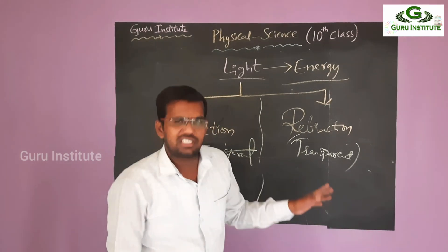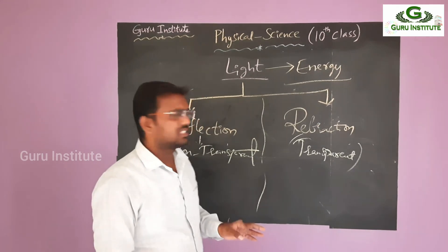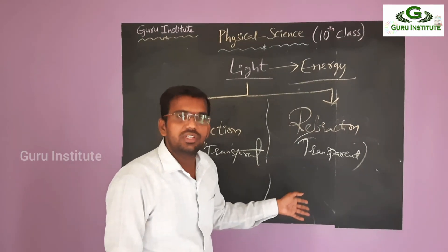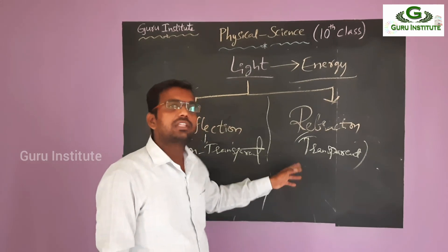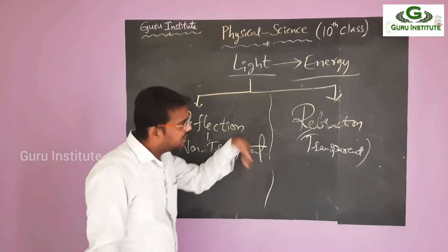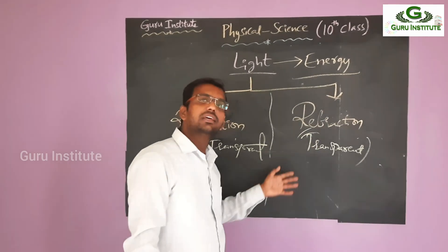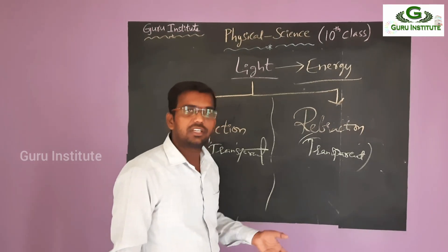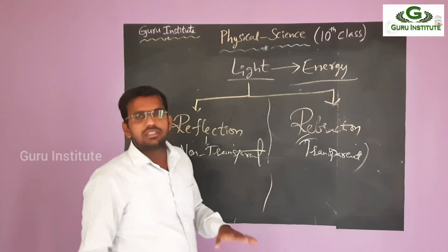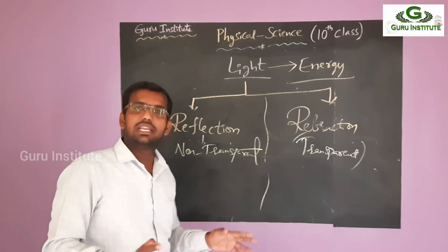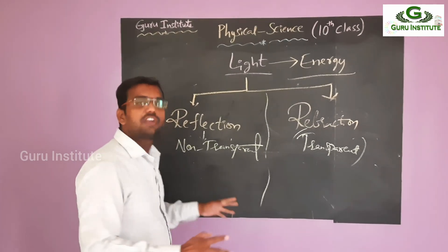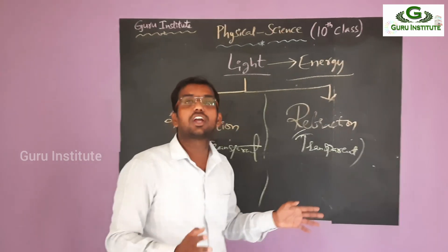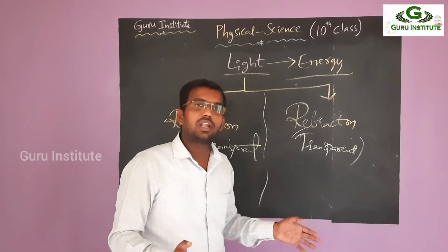Okay children, today we are just discussing the basic definitions of reflection and refraction. In the next class we are going to discuss the main properties of reflection, what are the main properties of refraction, and their ray diagrams — how they look. So this is our introduction. Totally, this introduction is not the 10th class concept — it is the 8th and 9th class concept. So after 3 or 4 classes, we are entering into our first chapter: Reflection of Light at Curved Surfaces.